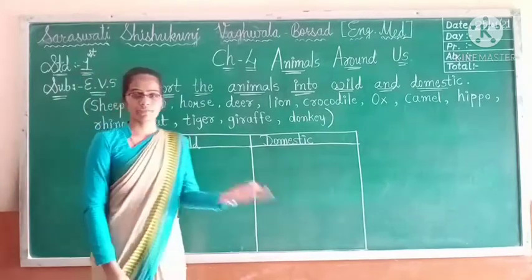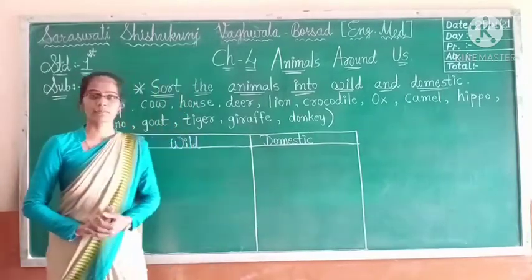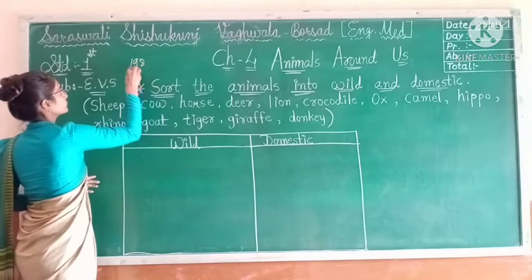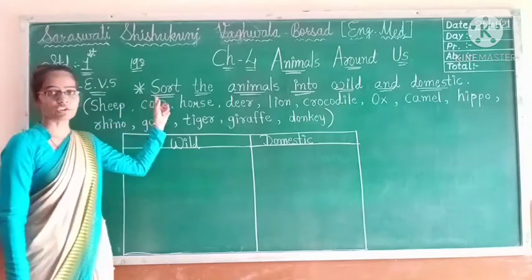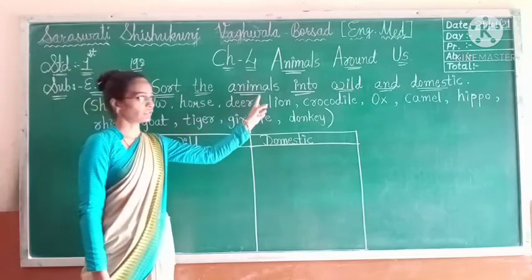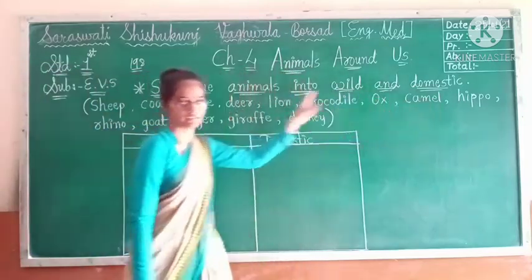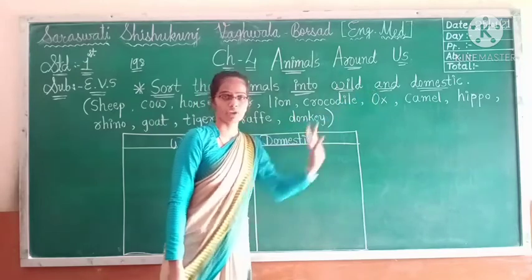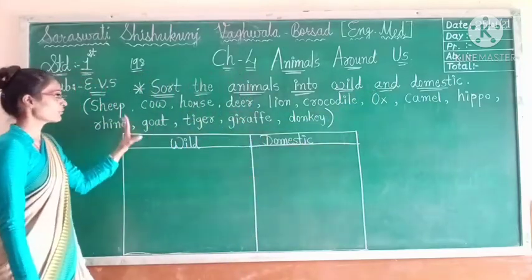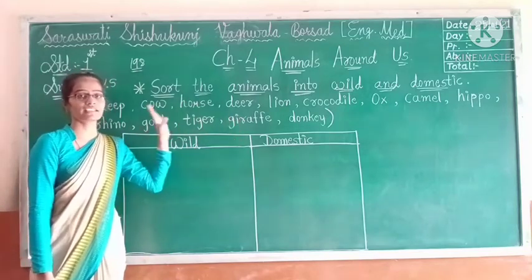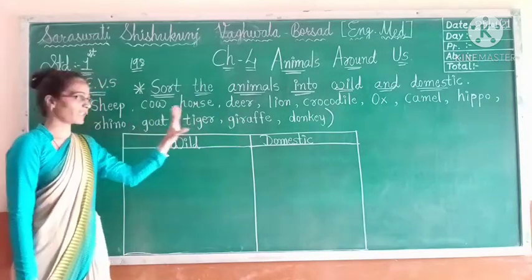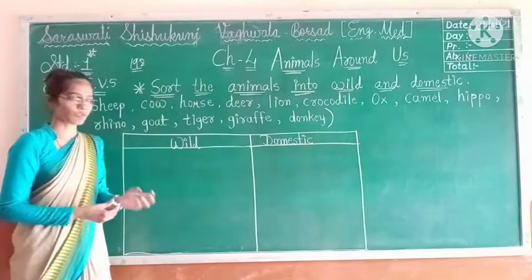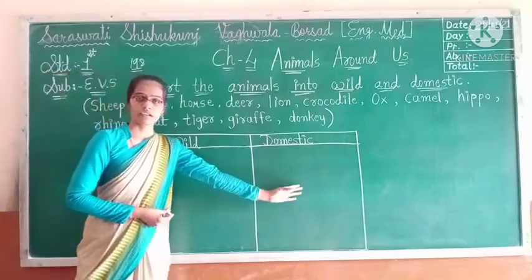In our previous video, we already discussed the question and answer. Now open your question book, page number 198. On that page there is one more exercise: Sort the animals into wild and domestic. So here, the names of animals are given in the bracket — both wild and domestic animals' names are mixed. We have to classify or sort them into wild and domestic.